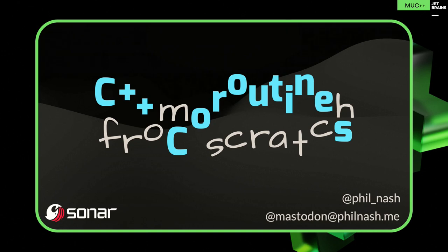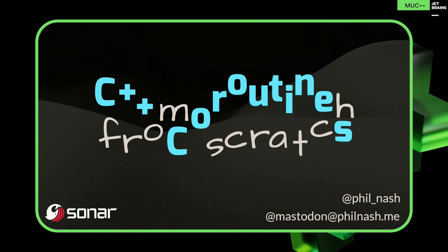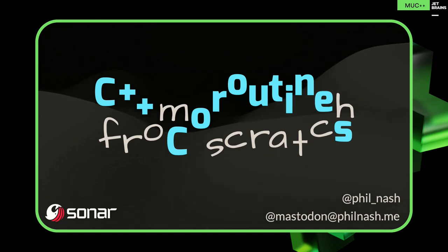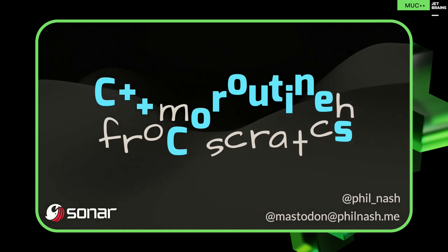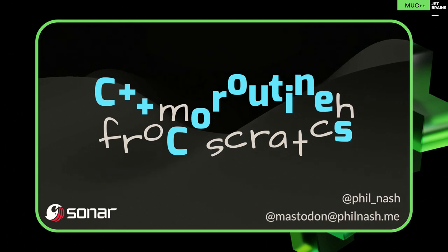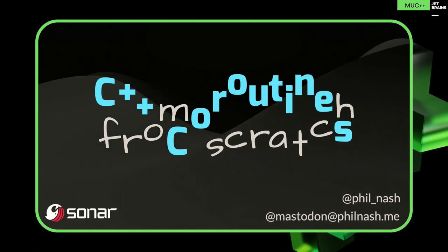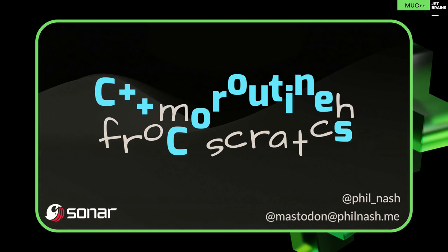So, co-routines. This is a slightly different approach to talking about co-routines. Who here is already an expert at C++ co-routines? Who's already comfortable with C++ co-routines — maybe you've already used them on a project, or you think you probably could? Who's seen at least one other talk on co-routines for C++ and still doesn't quite get it? A lot more hands. Yeah, that's normal. It seems to be the rite of passage — you have to watch a few talks, read a few articles, and at some point it all starts to come together.